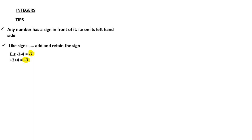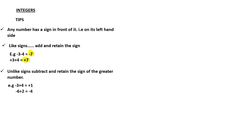Tip number three: unlike signs — we subtract, and retain the sign of the greater number. That is, if two numbers have different signs — one positive and one negative — subtract them and retain the sign of the greater number. For example, negative three plus four: subtract to get four minus three which is one, and since four is greater, retain the positive sign, giving positive one.